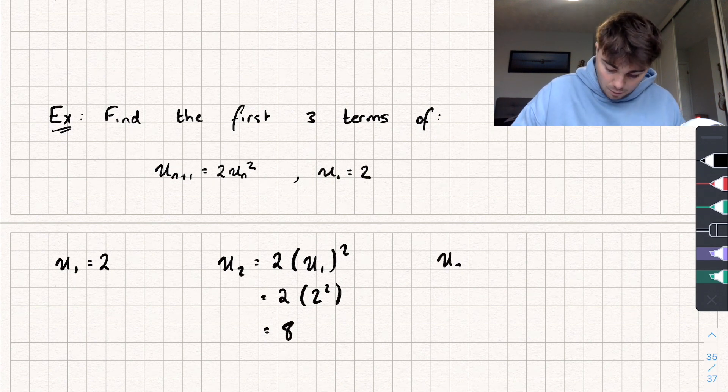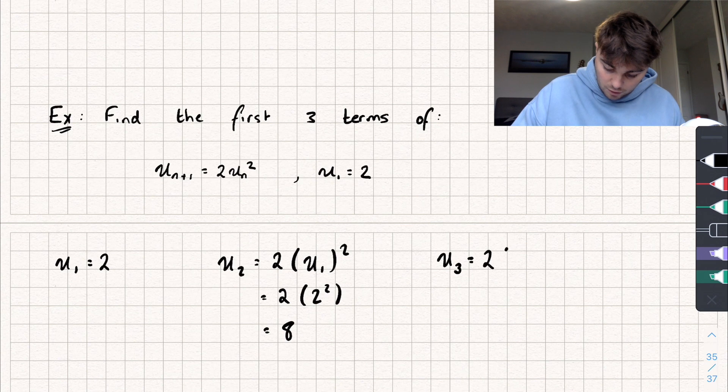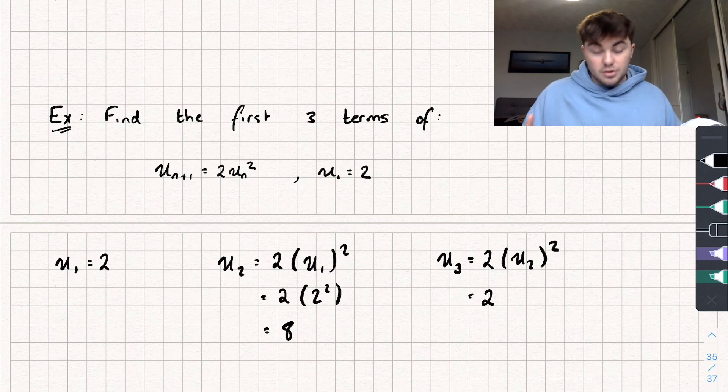And then finally, the third term, u_3, that's going to be equal to two multiplied by u_2 squared. Well, we know what u_2 is, the second term, that's equal to eight. So it's going to be two multiplied by eight squared.